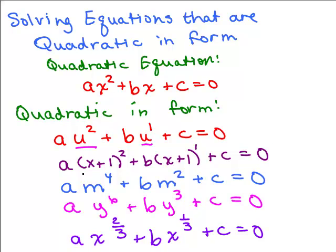For instance, if we have A(X+1)² plus B times (X+1) to the first plus C, that's quadratic in form because I could rewrite that X+1 as u, and that would be Au² + Bu + C. That's what we're going to do on this video. We're going to have an example like this.